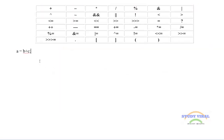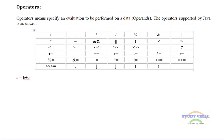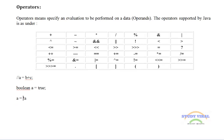Sometimes some operators need two variables to perform an operation, and some operators only need a single variable — those are called unary operators. For example, if a is a boolean value declared as boolean a = true, then using the exclamation mark — the NOT operator — reverses its value to false in this case.